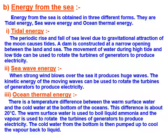Sea wave energy: when strong winds blow over the sea, they produce huge waves. The kinetic energy of the moving waves can be used to rotate the turbines of a generator to produce electricity. Ocean thermal energy: there is a temperature difference of about 20 degrees centigrade between warm surface water and cold water at the bottom of the oceans. The warm surface water is used to boil liquid ammonia, and the vapor is used to rotate the turbine of a generator to produce electricity. The cold water from the bottom is then pumped up to cool the vapor back to liquid.